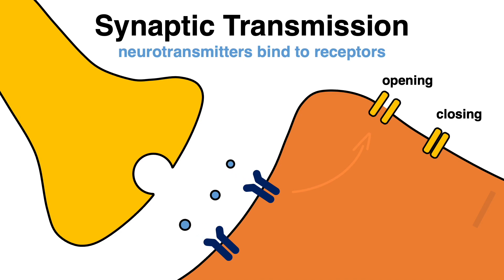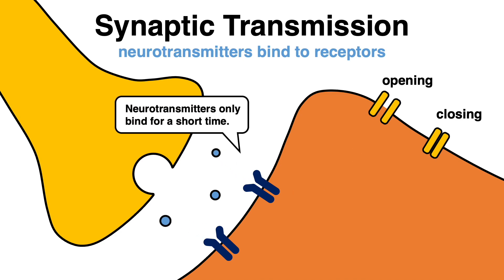Neurotransmitter molecules only bind to receptors for a very short time. Once they detach, the ion channels return to their resting state. Neurotransmitters are enzymatically degraded or reabsorbed by the axon terminal.